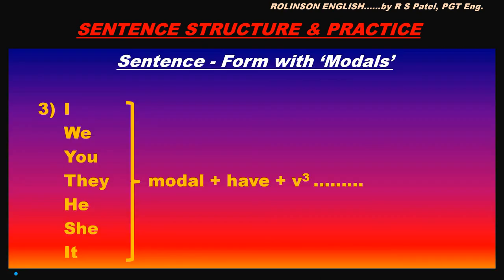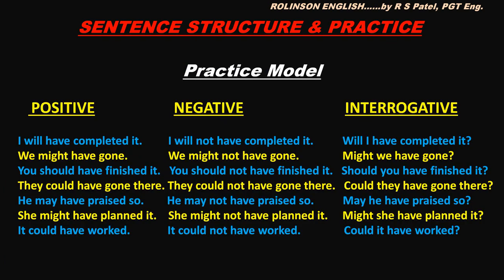Another form is sentence form with modals, number three: with all the pronouns — I, we, you, they, he, she and it — use any one of the models plus 'have' followed by the third form of the verb. Positive sentences: I will have completed it, we might have gone, you should have finished it, they could have gone there, he may have praised so, she might have planned it, it could have worked.